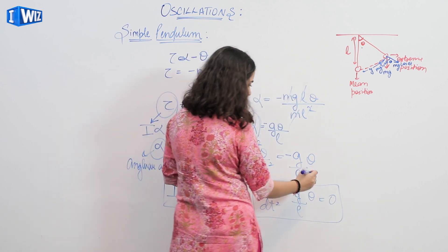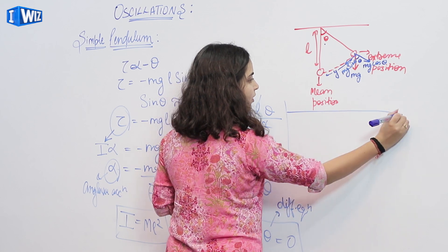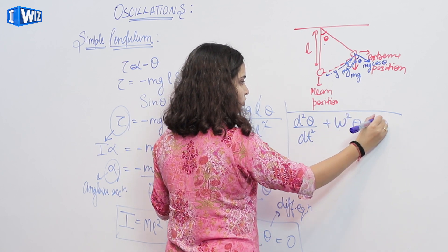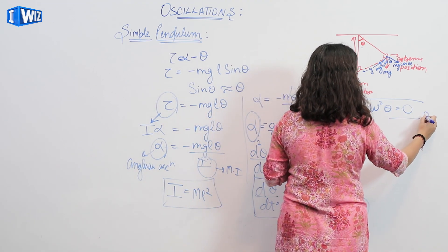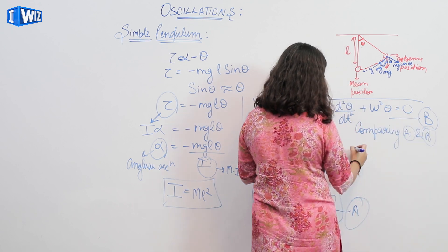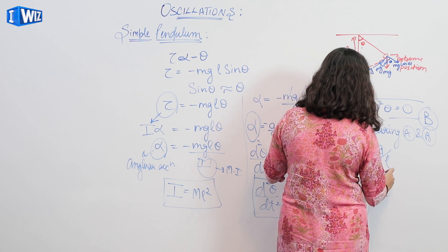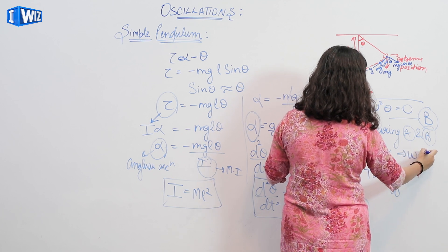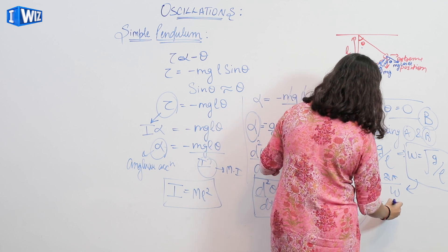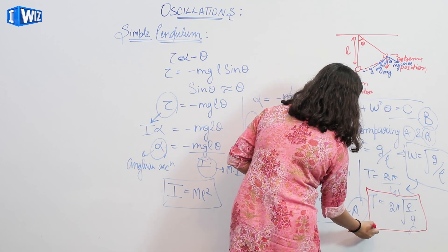This takes the form of a differential equation: d²theta/dt² plus (g/l) theta equals zero. Comparing with the general form d²theta/dt² plus omega squared theta equals zero, we get omega squared equals g upon l, so omega equals square root of g/l. Since the time period T equals 2pi upon omega, substituting the value of omega, T equals 2pi times the square root of l upon g. This is the time period for a simple pendulum.